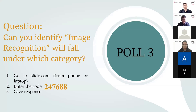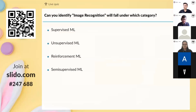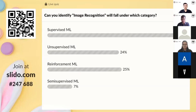Here is a poll for you all. Please open slido.com and write the code 247-688. The question is: can you identify which category image recognition falls under? Only 24% were able to guess the correct answer. The correct answer is unsupervised machine learning. Hopefully most of you will get it right next time.